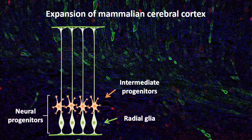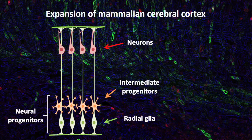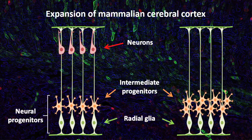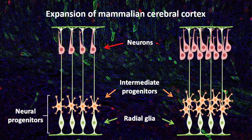The size of cortex is primarily determined by the number of neurons. Cortical neurons are generated by two major types of neuroprogenitor cells: radial glia and intermediate progenitors. During neurogenesis, amplification of the progenitor pool is achieved by the generation of intermediate progenitors from radial glia. Differentiation of these progenitors then leads to the production of neurons.